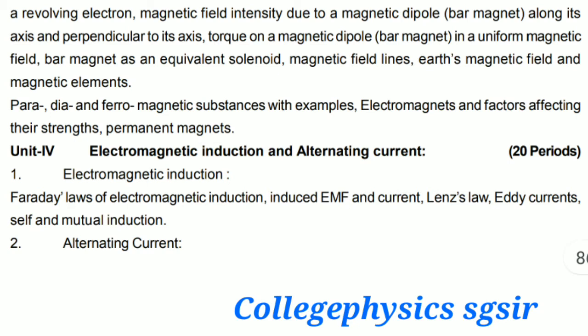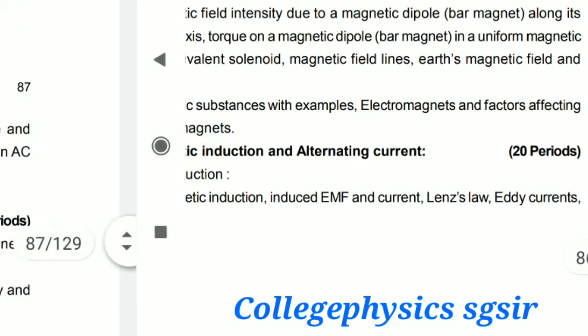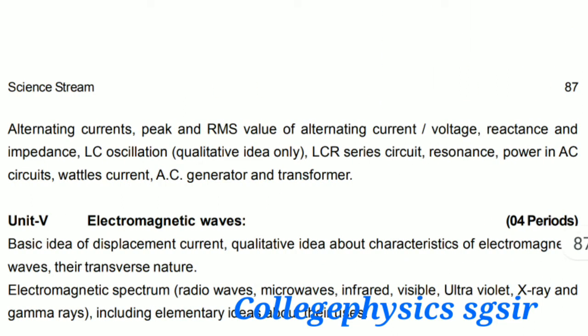Unit 4 is Electromagnetic Induction and Alternating Current. In electromagnetic induction we discuss Faraday's law of electromagnetic induction, induced EMF and current, Lenz's law, eddy current, self and mutual inductance. In the second chapter, Alternating Current, we discuss peak and RMS values of alternating current and voltage, LR, LC, LCR circuits, and also generators and transformers. These two units carry a total of 16 marks in the final examination.